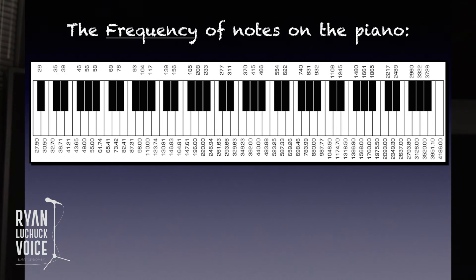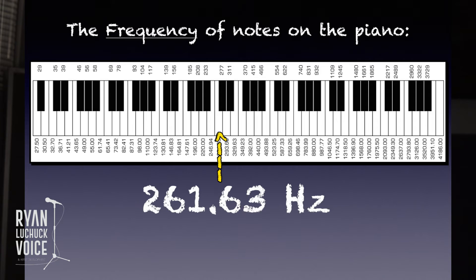So here we see the frequency of notes on the piano. You'll see a number associated with every single key on the piano. So let's go to middle C: 261.63 Hertz. That means that sine wave is oscillating back and forth 262 times a second. Isn't that amazing?